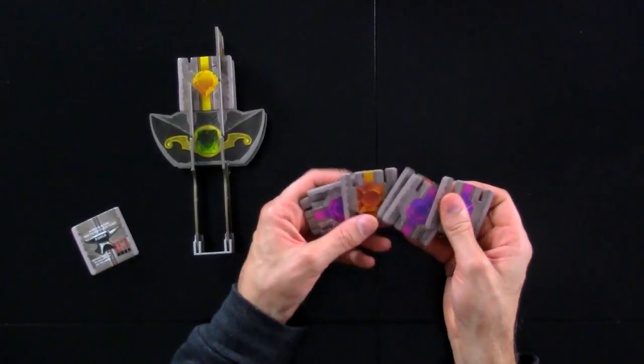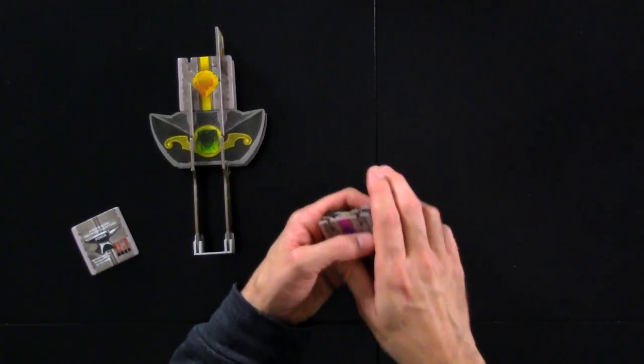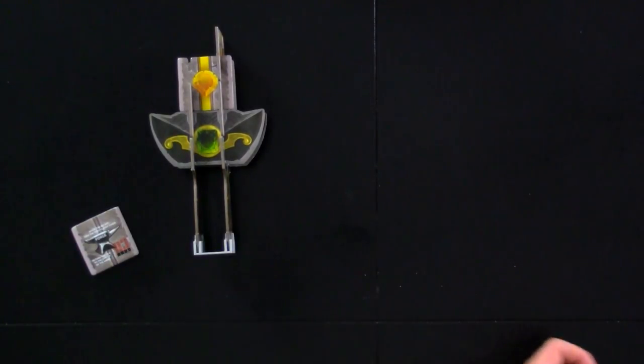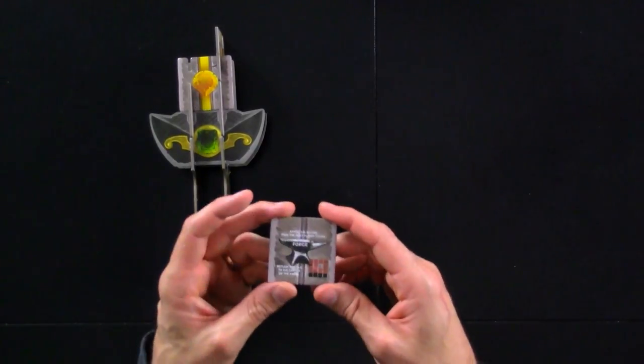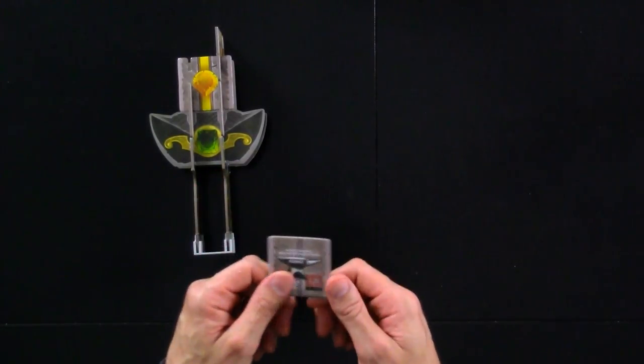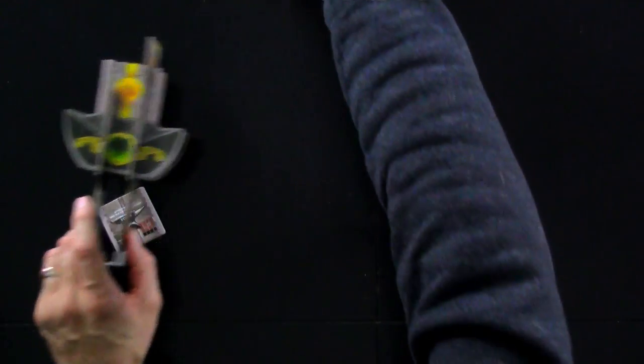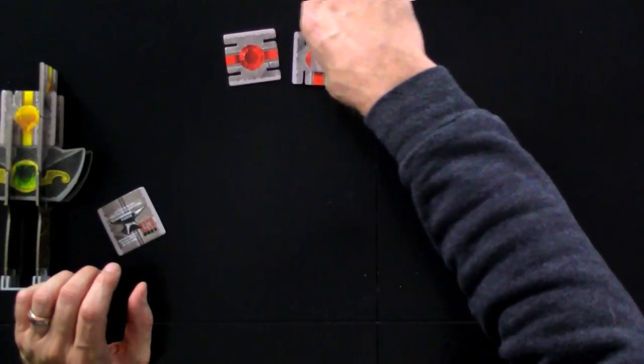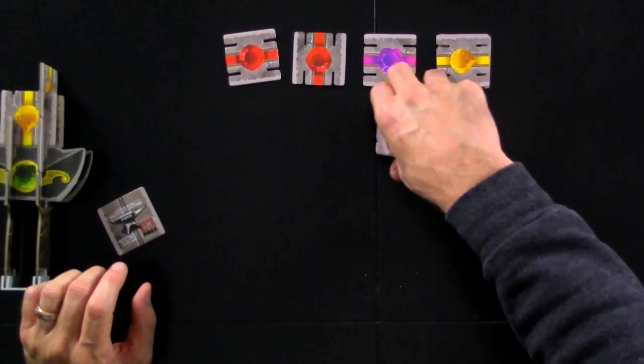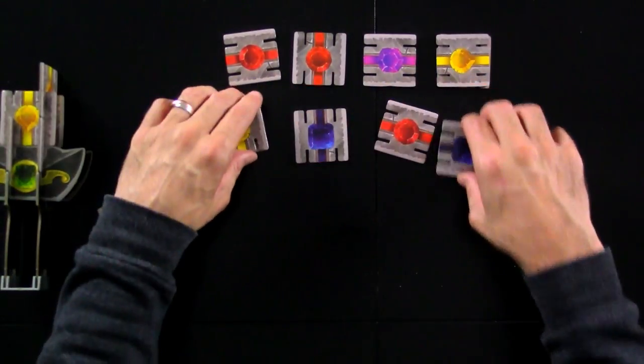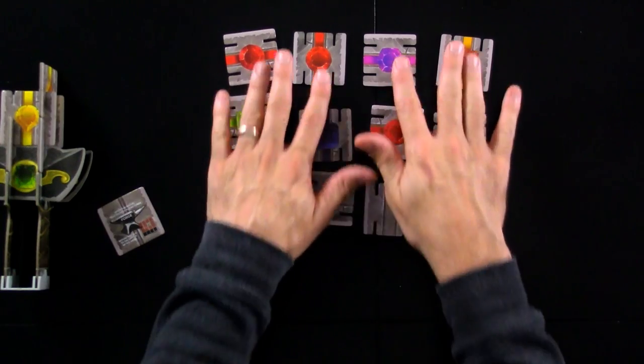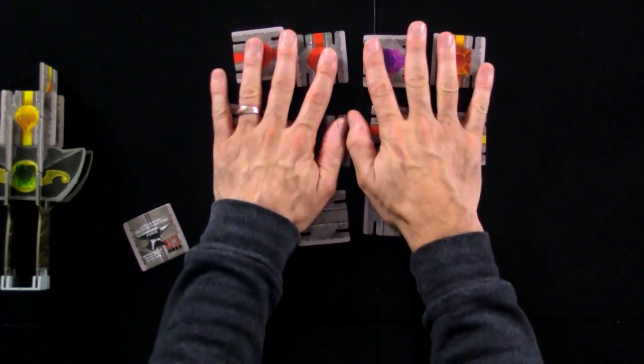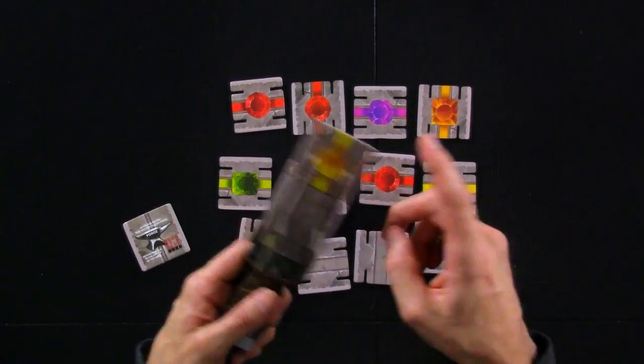And while I'm building mine, Jen is taking all these purples and oranges and blanks she got and building up her sword. But after all that is said and done, the first player marker will, if nobody took this, will end up changing. But otherwise, I'm going to hold on to first player. And for the next round, a bunch more tiles come out.